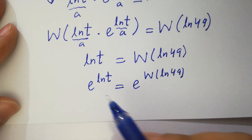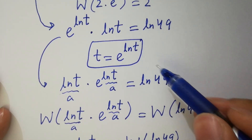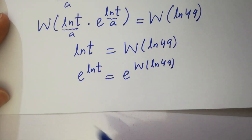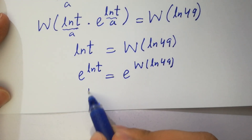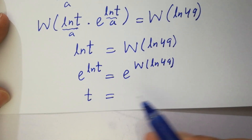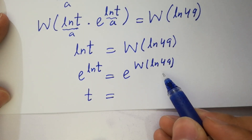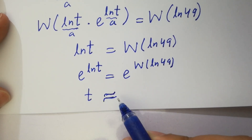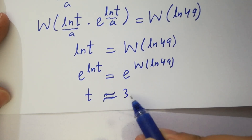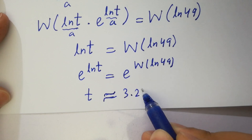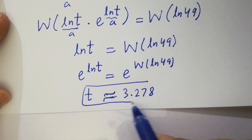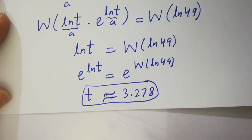Since e to the power ln t equals t, we get t equal to e to the power W(ln 49), which is approximately equal to 3.278. This is the value of t.